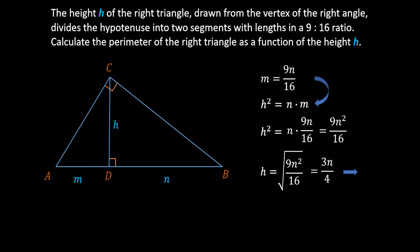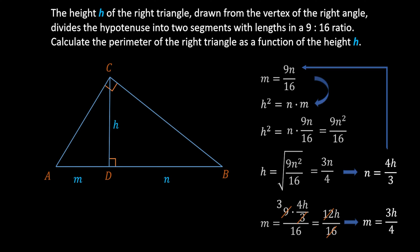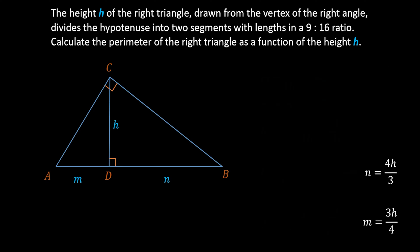We can conclude that N is equal to 4H over 3. Substituting this back into M equals 9N over 16, we get M equals 9 times 4H/3 over 16. Cancelling 9 and 3 gives 12H over 16, which simplifies to 3H over 4. We now have both segments N and M expressed as functions of height H.